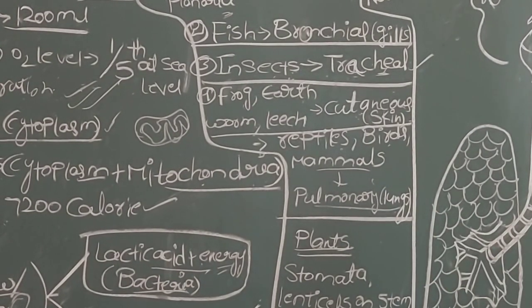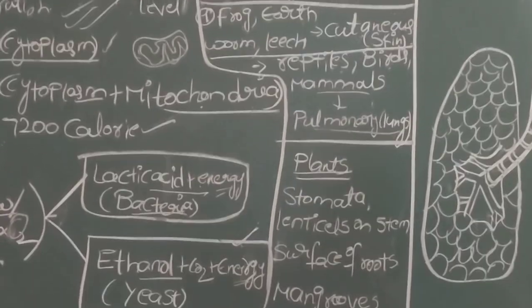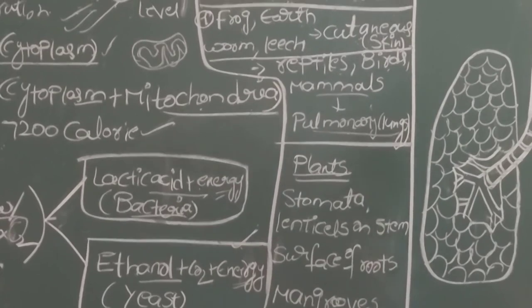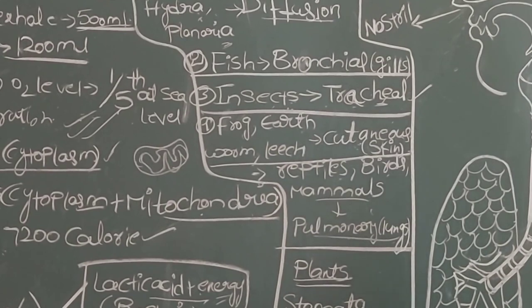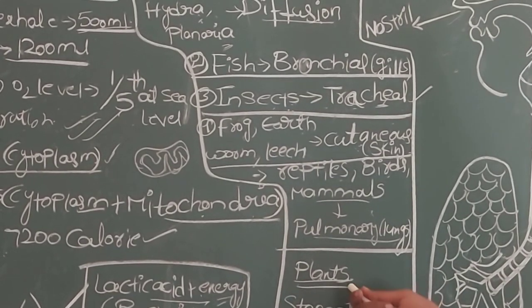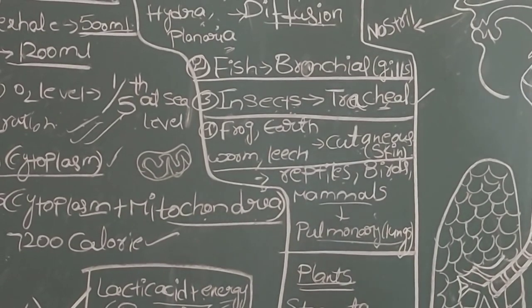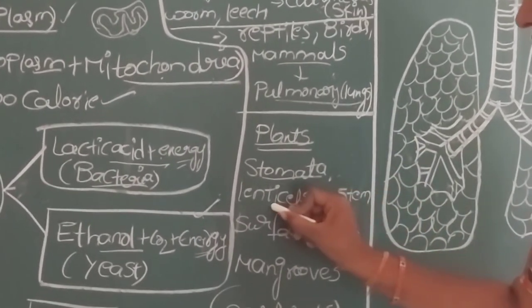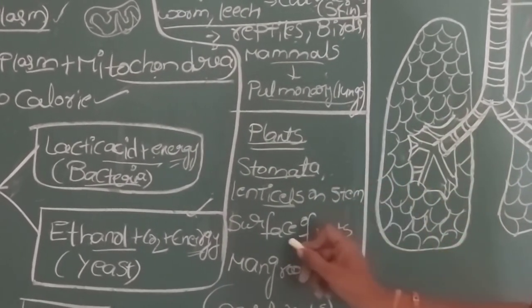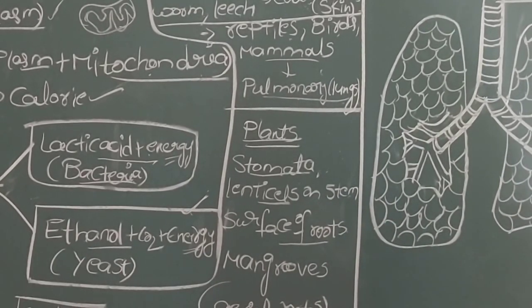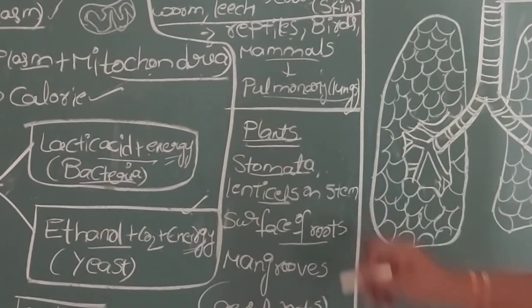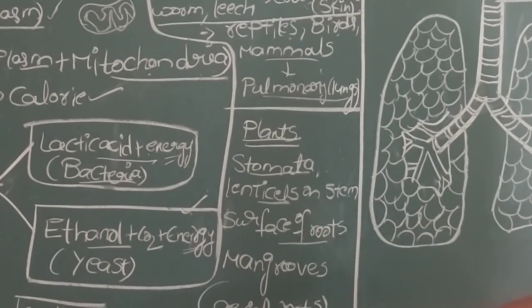Plants do not have special respiratory organs. Gas exchange in plants takes place mainly through stomata — small pores present in the leaves. Along with stomata, lenticels (loose connective tissue present on the stem) and the surface of roots also play a role in gas exchange in plants.